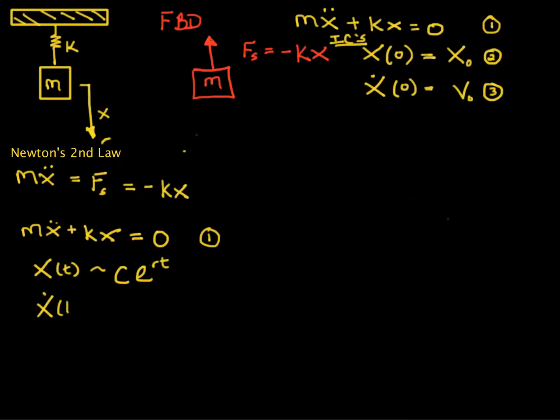The derivative, X dot of t, is then equal to C r e to the rt.